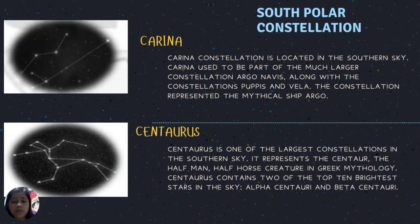Centaurus represents the centaur — the half-man, half-horse creature in Greek mythology. Centaurus contains two of the top ten brightest stars in the sky: Alpha Centauri and Beta Centauri.